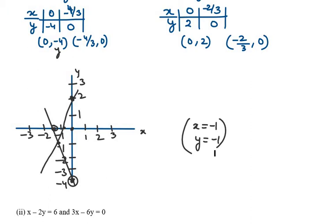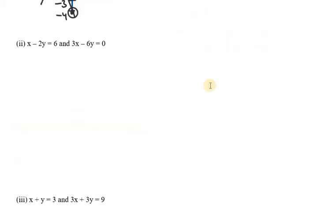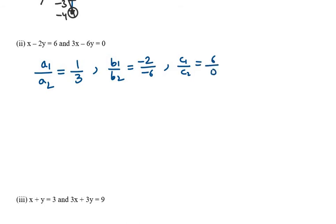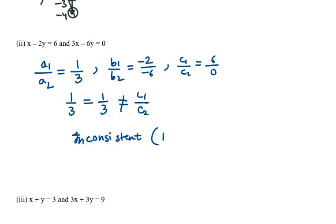Now let's check the second part. We have x minus 2y equals 6 and 3x minus 6y equals 0. a1 over a2 is 1 over 3, b1 over b2 is minus 2 over minus 6 which is 1 over 3, and c1 over c2 is 6 over 0, which is not defined. The first two ratios are equal but the last one is undefined, so it is not equivalent to the first two. Therefore, this system is inconsistent — it has no solution — and we don't need to make any graph.